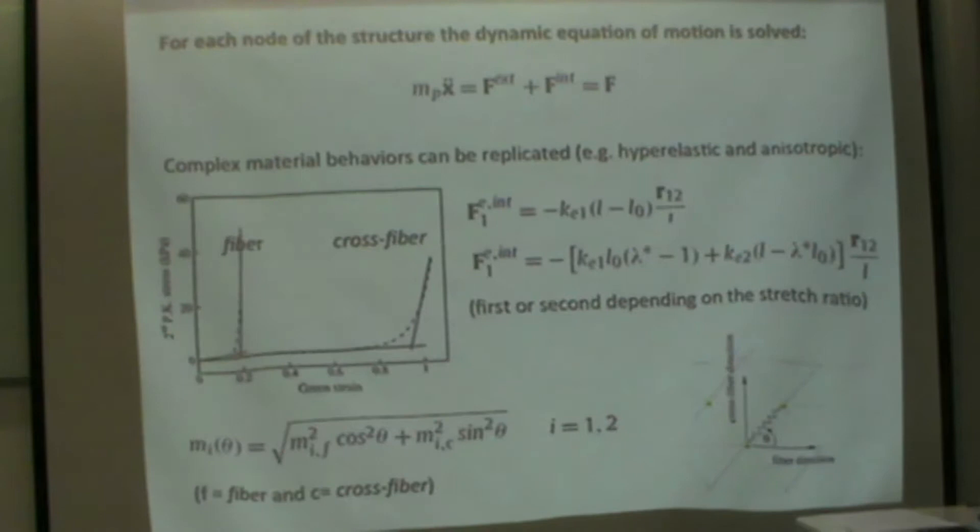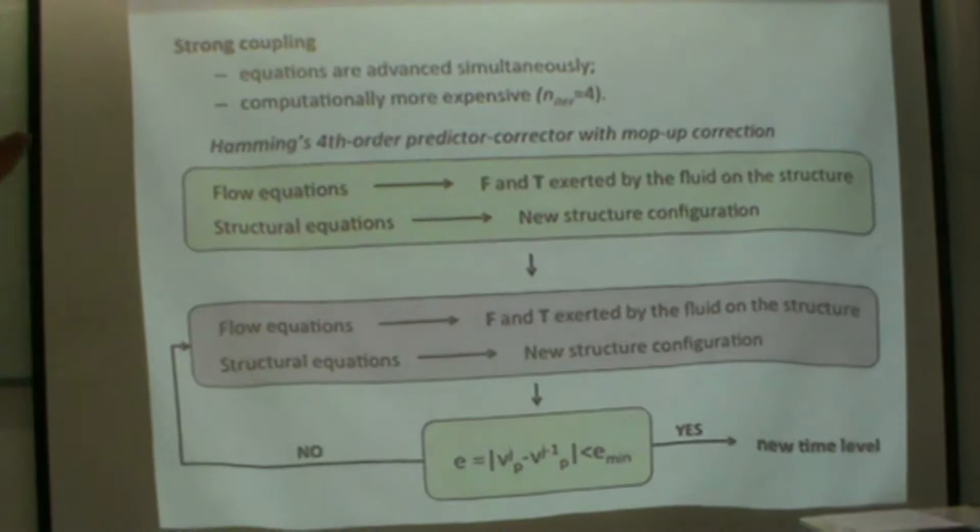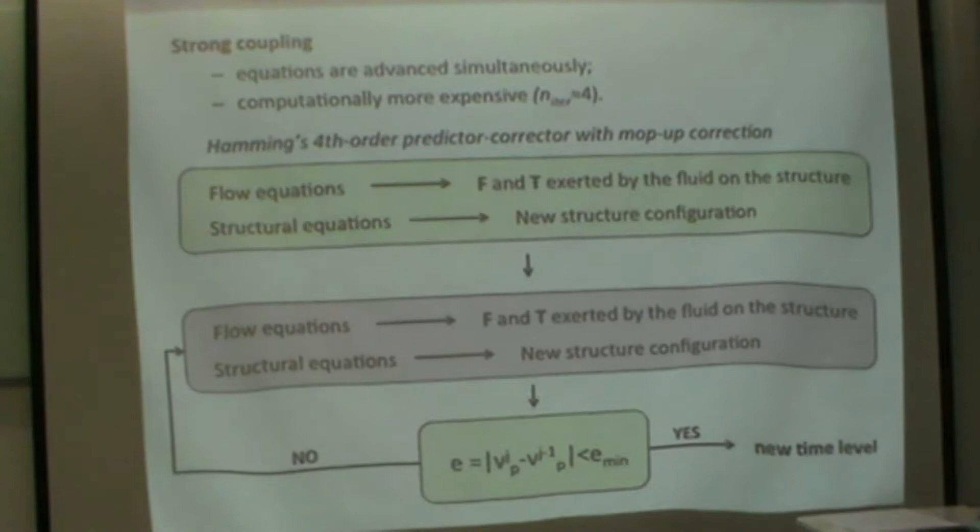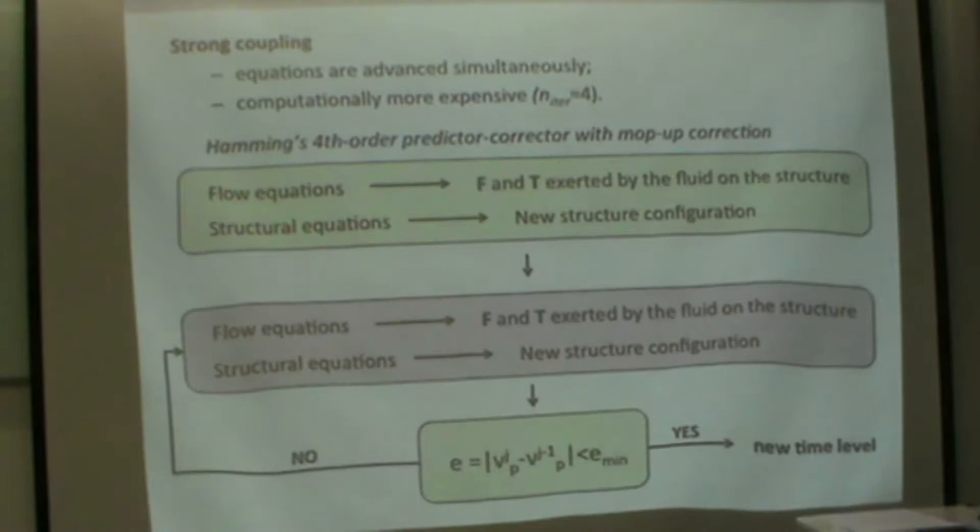We have the fluid-structure interaction coupling, done iteratively in a strong way. Equations are advanced in time simultaneously using a predictor-corrector approach, the fourth order Hamming's method. We solve first the flow equation, then evaluate the forcing, then the structural equation, then again the flow, done iteratively until the error on the velocity of each point is below a certain value. We have an average of 2 to 4 iterations, so we need to solve at least 2 times the flow equation and 2 times the structural equation.